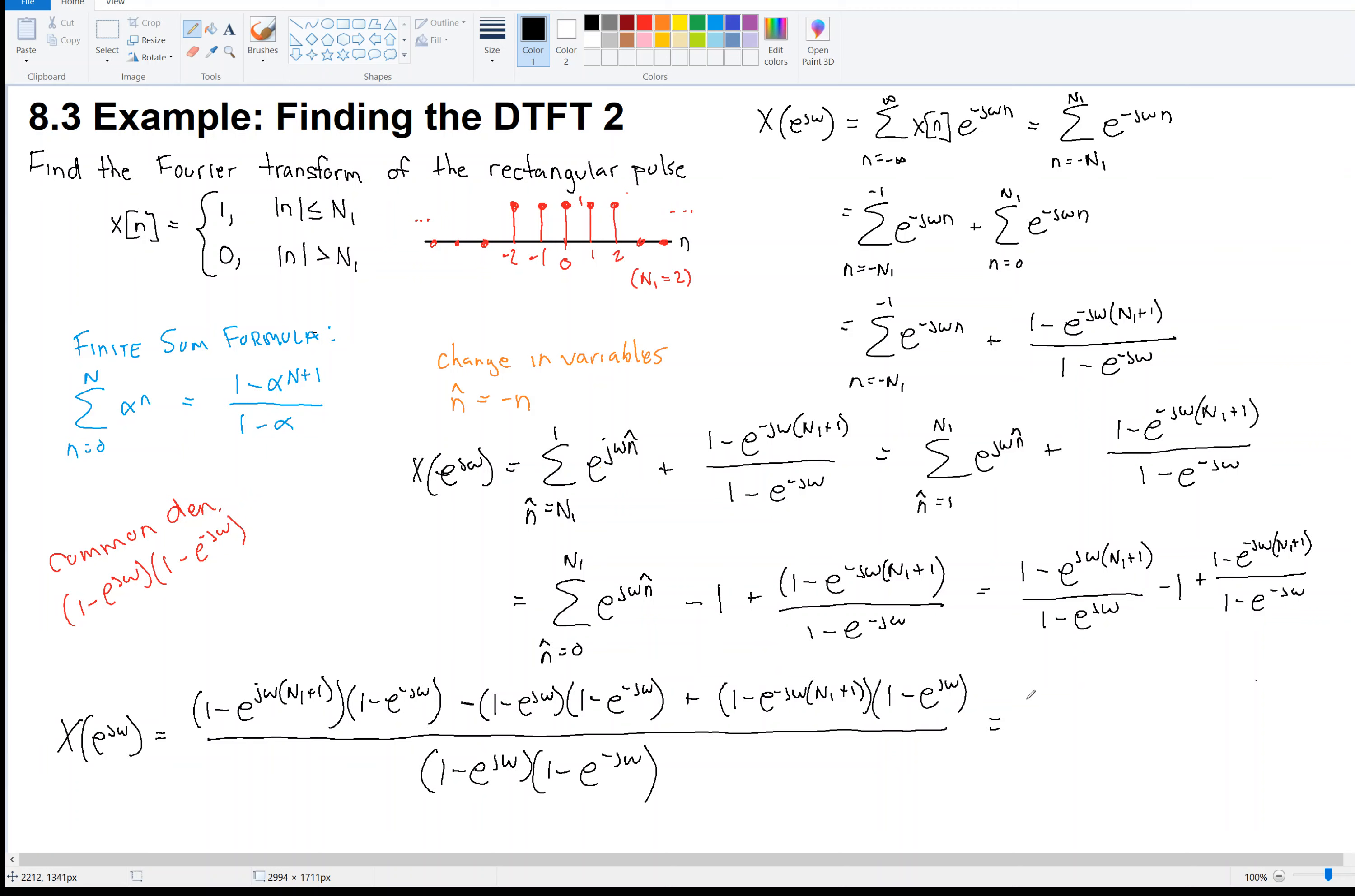And what you end up getting is the sine of omega times n1 plus 1 half over the sine of omega over 2. So, that's the answer. All right? Now, I would not expect you to be able to do this on your own without being told that this is the answer. So, you really, if you can get to, I would expect you to be able to solve the summations. So, if you can get to this, if you could get to this, then you're in good shape.